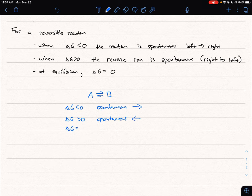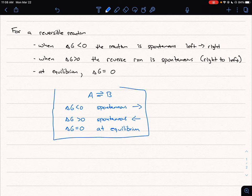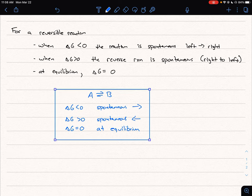And if delta G equals zero, then we are at equilibrium, and there'll be no net movement of our reaction overall. So we could summarize our first few points as shown here.